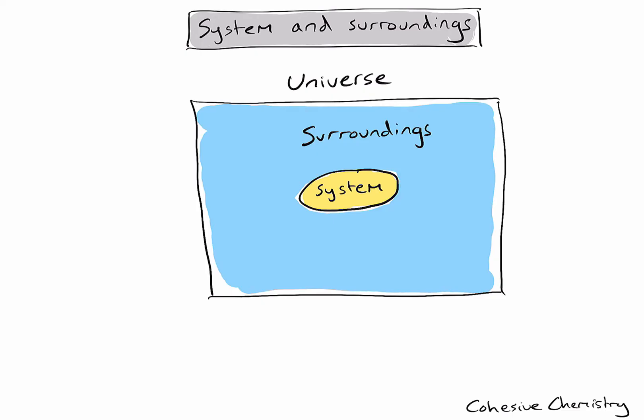Knowing that the total amount of energy in my universe can't change, that means that if my chemical reaction, or the system, releases energy, it must be absorbed by the surroundings. And conversely, if my chemical reaction, or the system, absorbs energy, this energy must be lost by the surroundings.